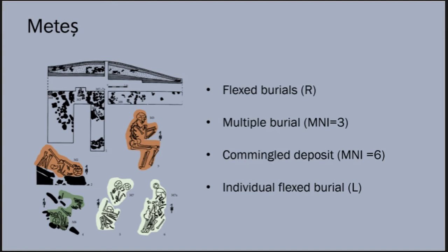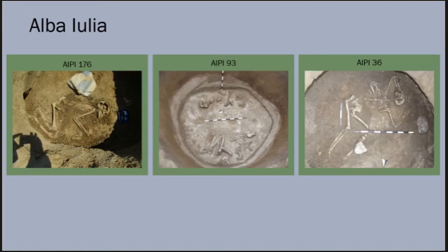At the lowland site of Alba Iulia, all individuals were placed within the boundaries of the settlement in bell-shaped pits that resemble storage pits typical for the period. Despite the similarity in the pits themselves, individuals here also showed a high degree of variability in their positioning. Individual 176 was arranged in a typical flexed position on the left side, but with hands flexed and turned outward.